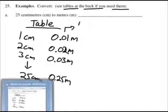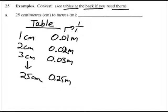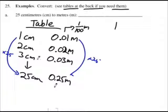But there's better ways to do it so that you don't mess it up. So there's one way to do it. Just do a table in your head or scribble it down. If one is the same as 0.01, then 25 is the same as 0.25.